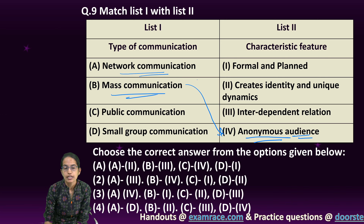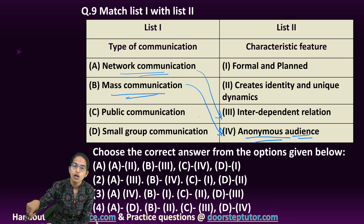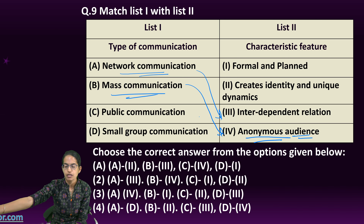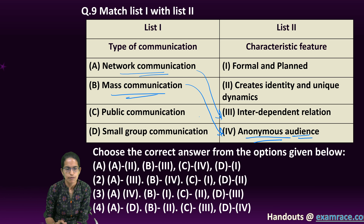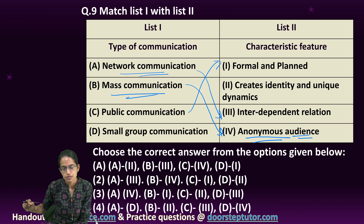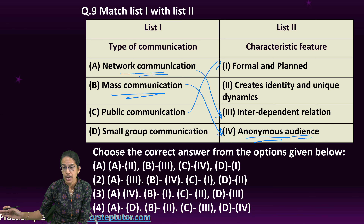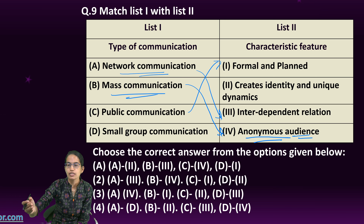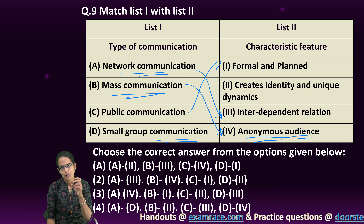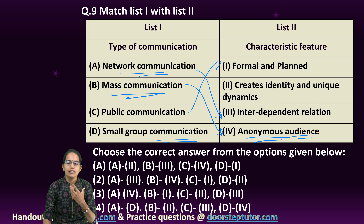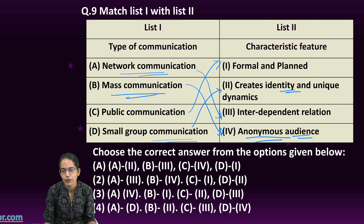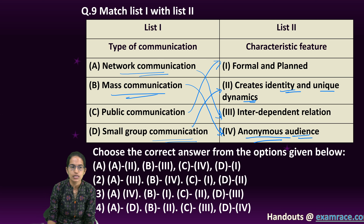Network communication is interdependent — for example, in a team project I depend on my teammate, my teammate depends on another, creating an interdependent cycle. Public communications are formal and planned — for instance, if a chief minister is invited to speak, the minister is informed well ahead about the topic and timing. Small group communication is interesting because a small group allows more unique interactions and the chance to create your own identity — creating unique identity and dynamics is the key aspect of this kind of communication.